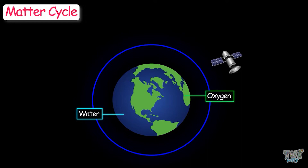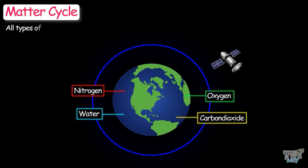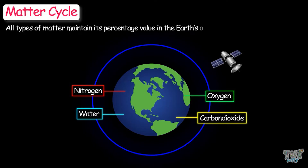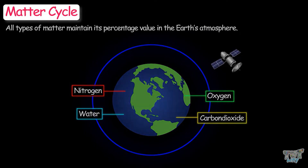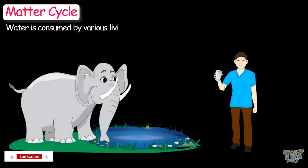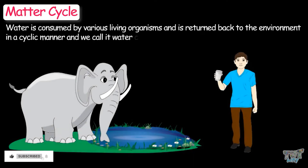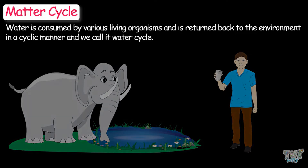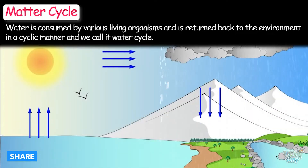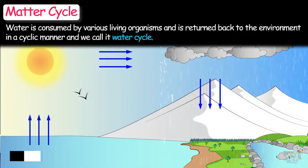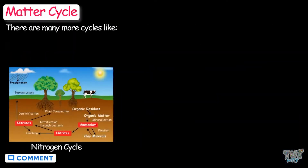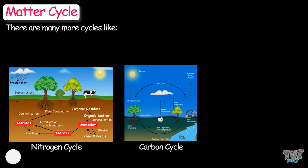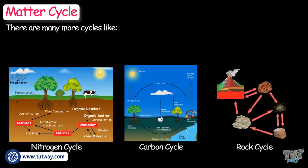Water, oxygen, nitrogen, carbon dioxide, or all types of matter maintain their percentage value in the Earth's atmosphere. Any matter — let's say water — is consumed by various living organisms and is returned back to the environment in a cyclic manner. We call this the water cycle. There are many more cycles like this: the nitrogen cycle, carbon cycle, rock cycle, etc. And all these cycles are called matter cycles.